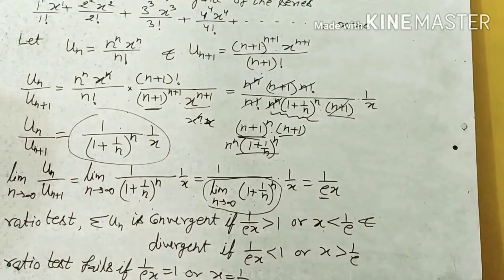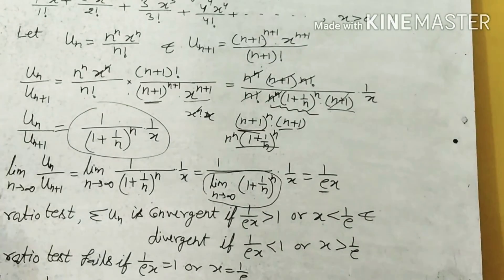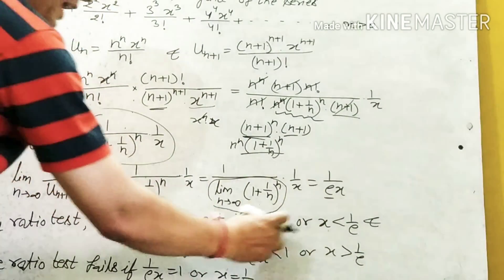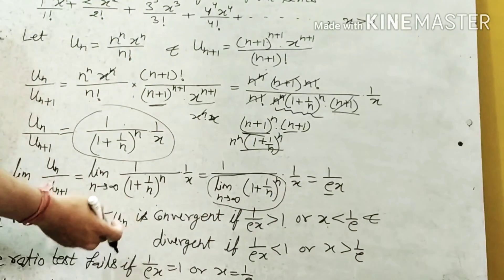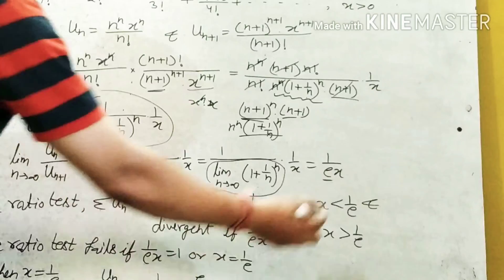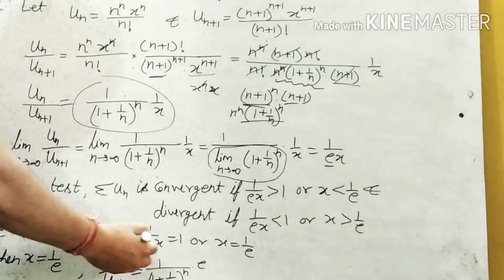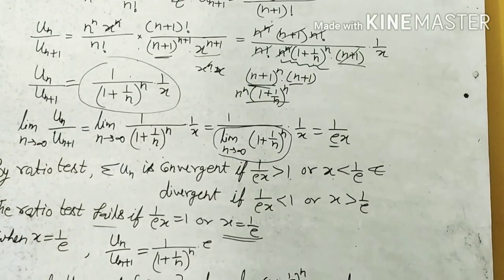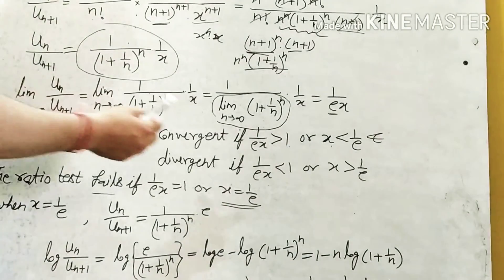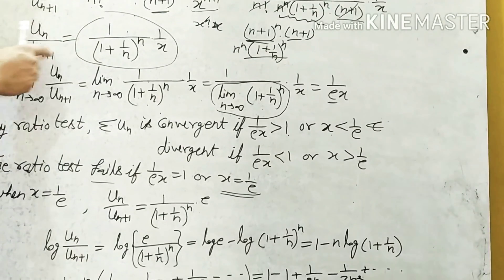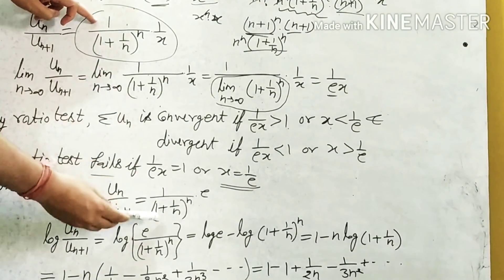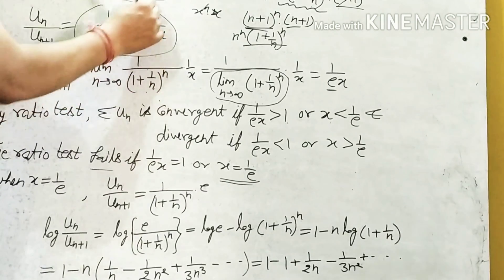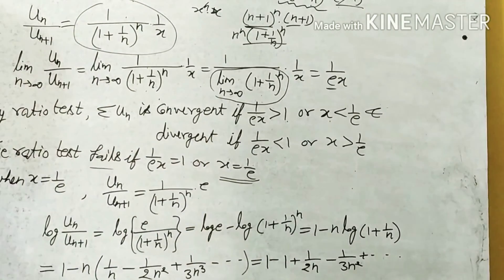So the limit equals 1/(ex). By the ratio test, summation un is convergent if 1/(ex) > 1, i.e., x < 1/e, and divergent if 1/(ex) < 1, i.e., x > 1/e. The ratio test fails when 1/(ex) = 1, i.e., x = 1/e. So at x = 1/e, we apply the logarithm test. Putting x = 1/e, un/un+1 = e / (1 + 1/n)^n.